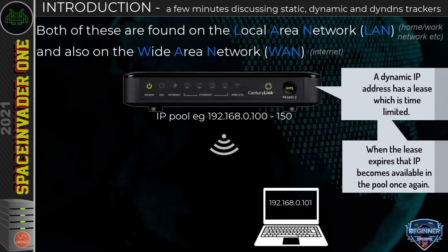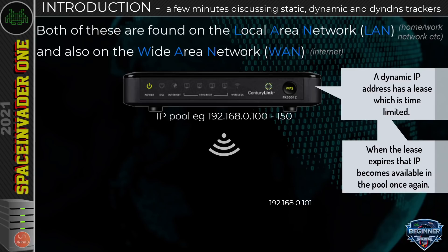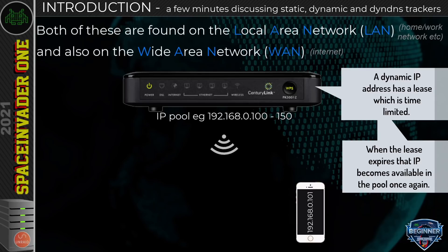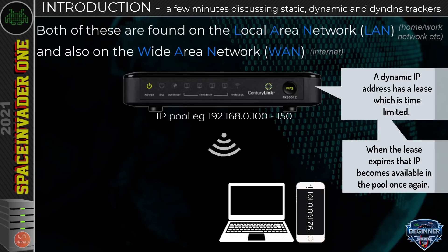So the laptop's IP address, say 192.168.0.101 — if when the lease expires the laptop is switched off or not on the network, it can't ask for that same lease again, so that specific IP address goes back into the pool and can be given to another device like a phone. When the laptop switches back on, because its original IP address isn't available anymore, it'll be given a different one.